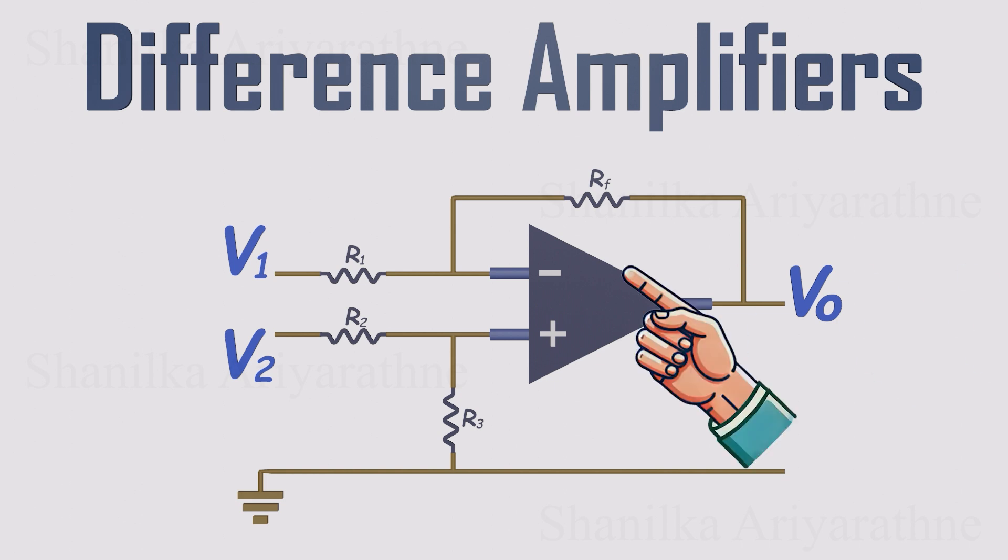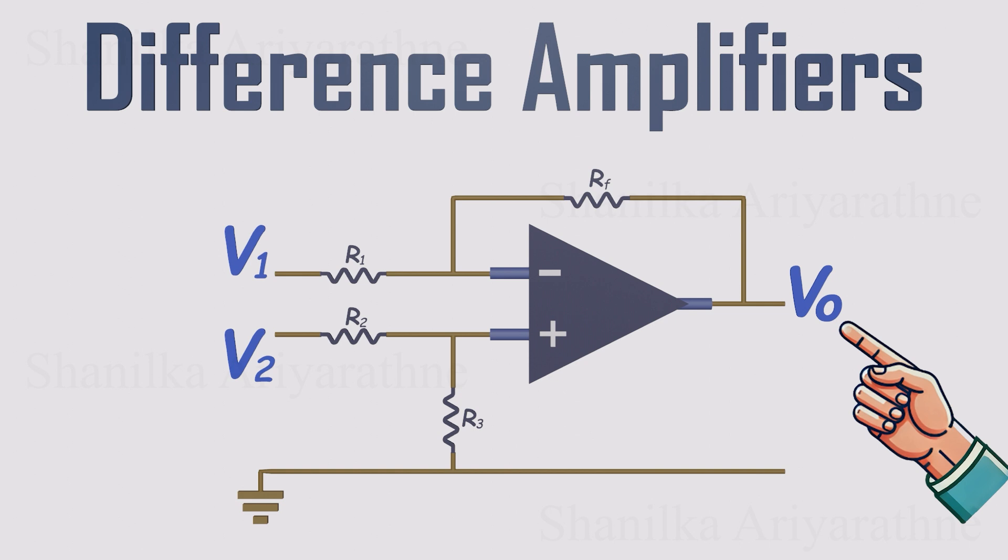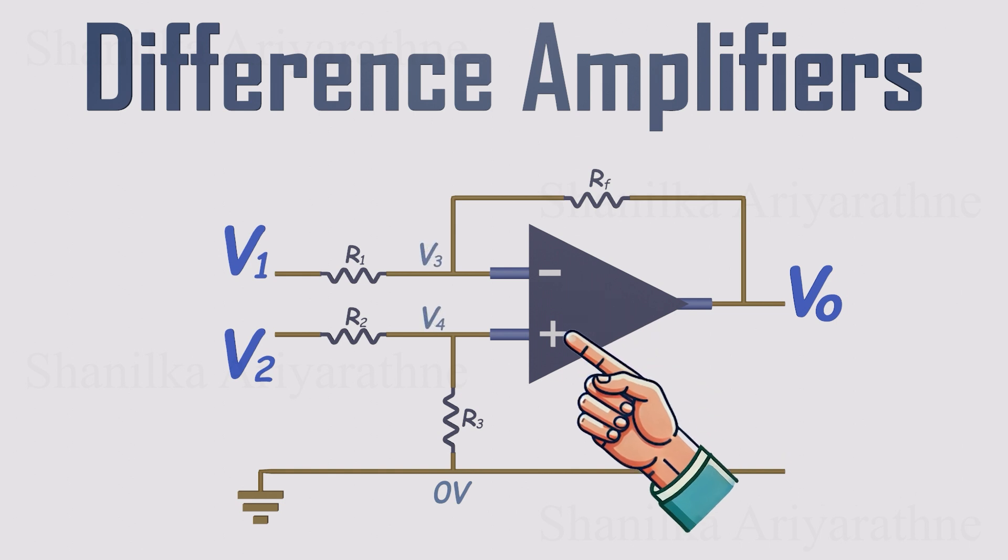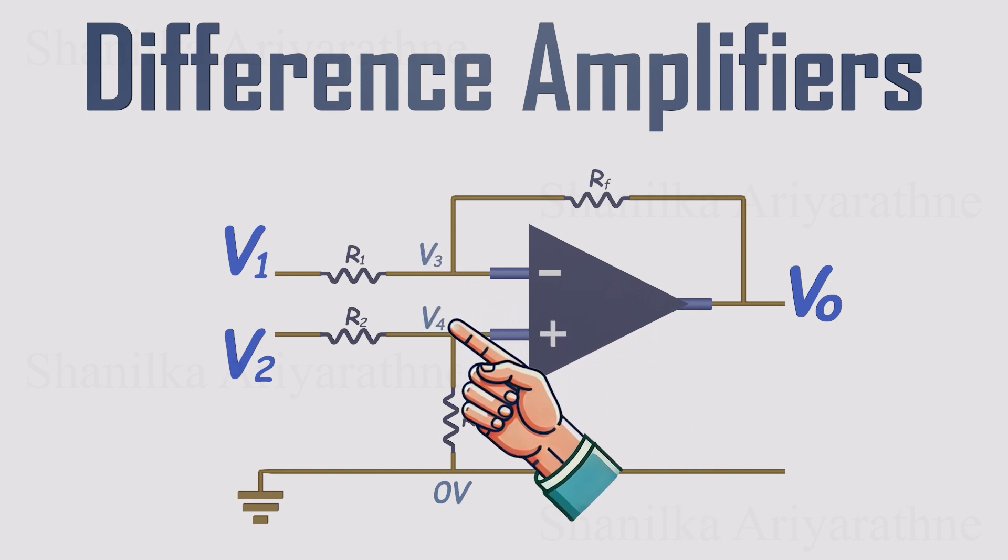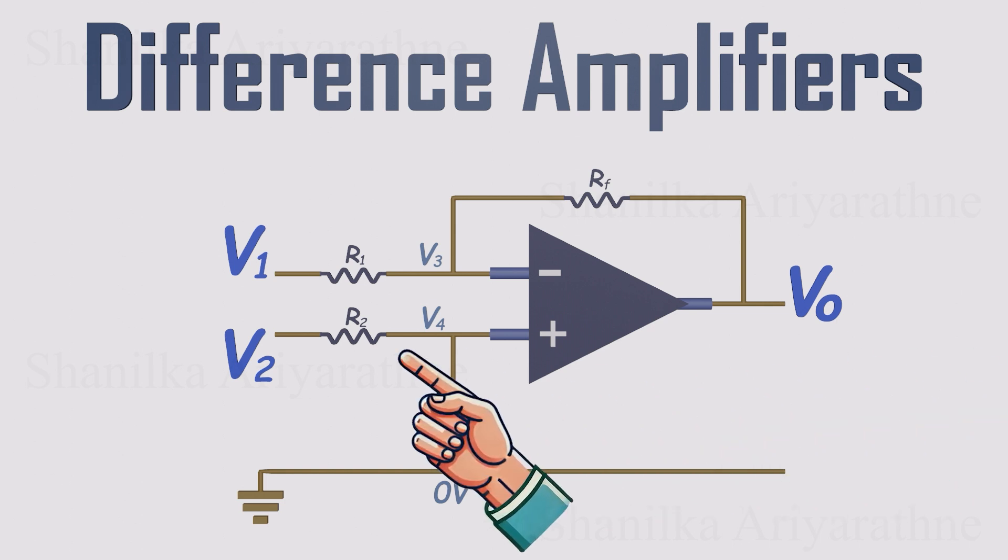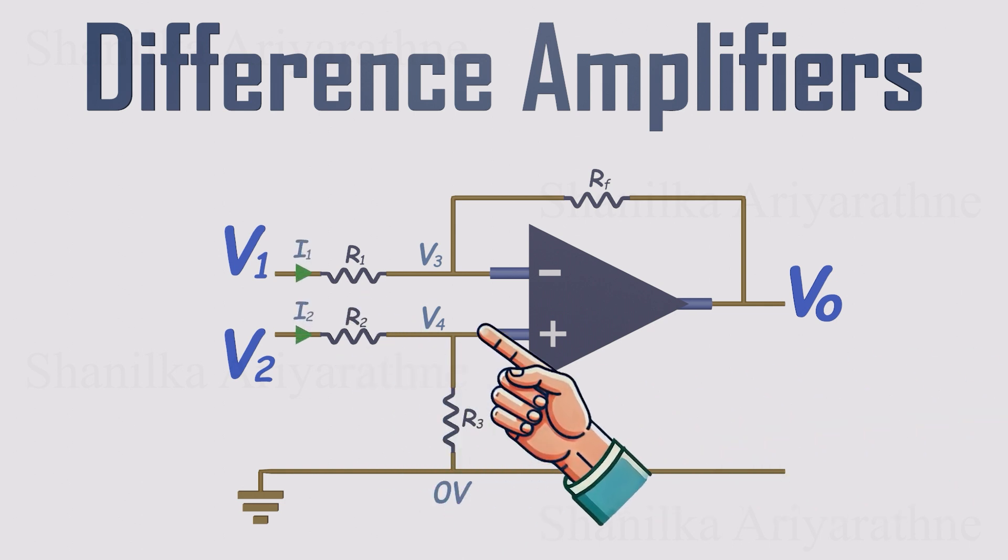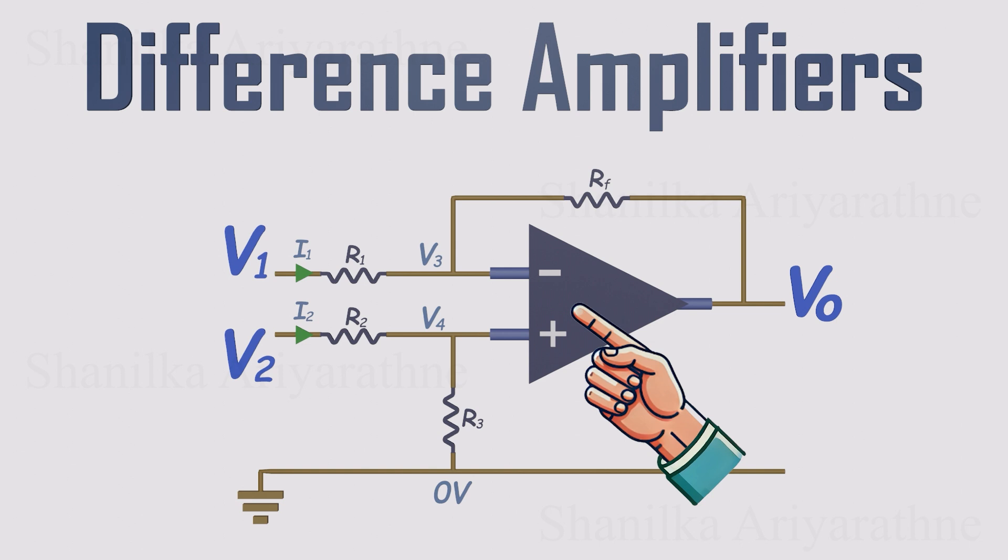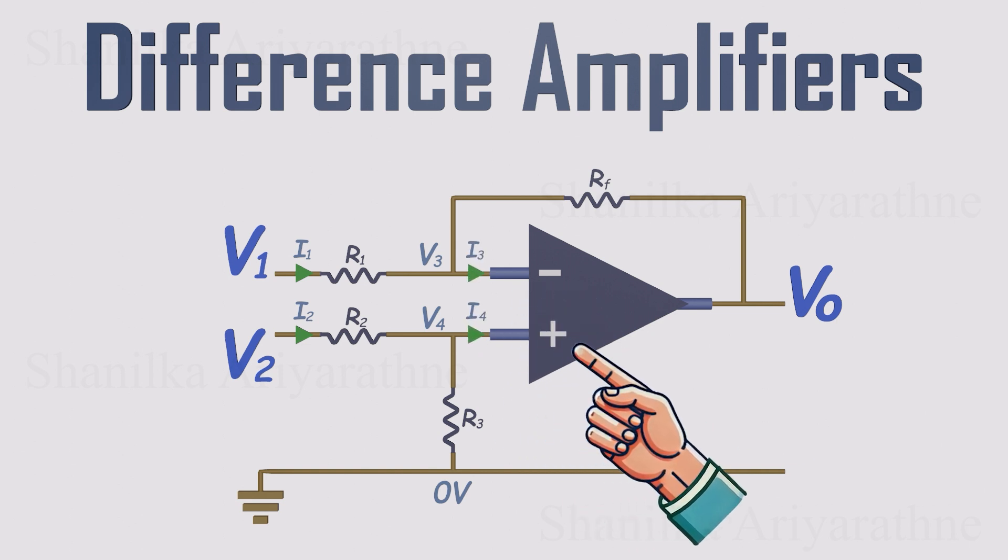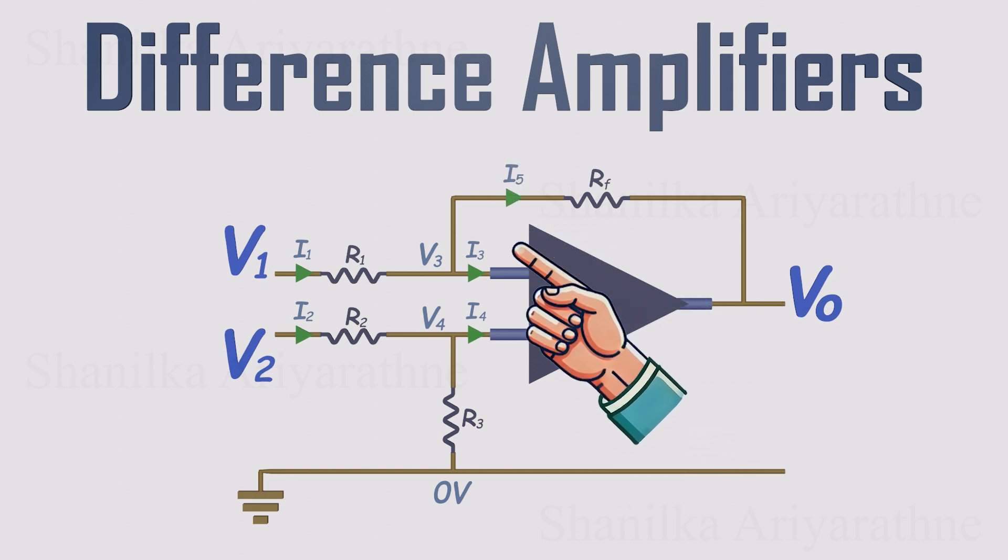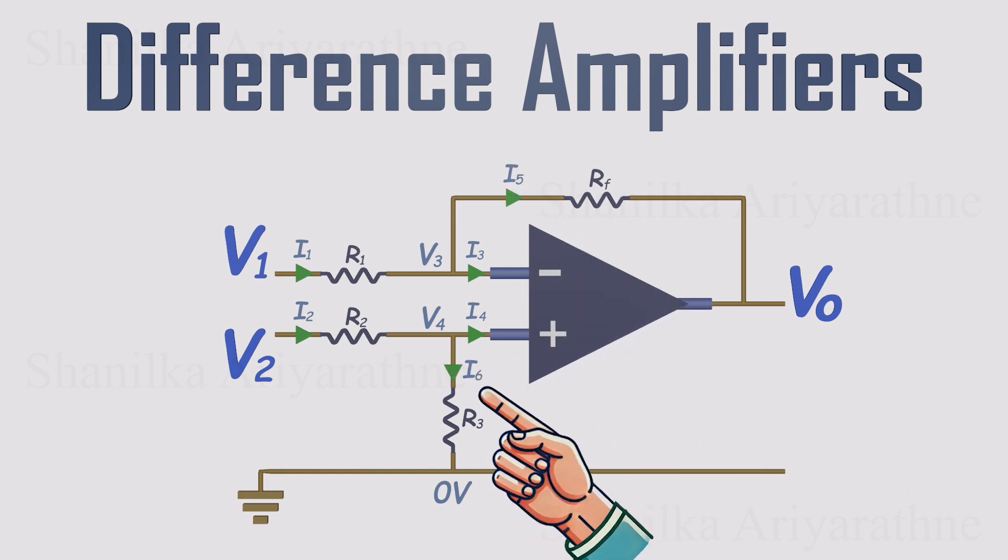Let's give the math a clean landing pad by labeling everything. The input voltages are V1 and V2, and the output is Vout. We'll set ground as 0 volts, handy when we start writing equations. The voltages at the inverting and non-inverting inputs will be V3 and V4. Now for the currents. Through the two input resistors, we'll define I1 and I2. The op-amp's input currents are labeled I3 for the inverting input, and I4 for the non-inverting input. The feedback resistor carries I5, and the resistor from V4 down to ground carries I6. Great. Everything's labeled.